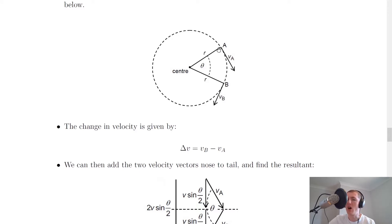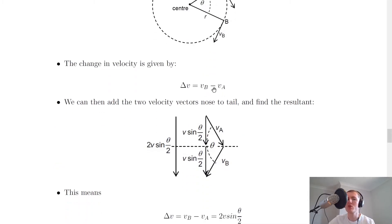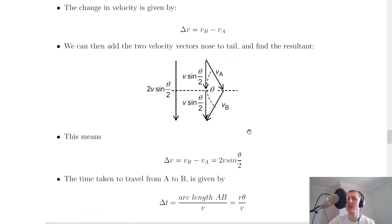The arc that we've swept out from A to B has an angle theta, and the radius of that circular path is R. Now because we've drawn two velocity vectors VA and VB, we want to add those two vectors together nose to tail. Adding these two vectors nose to tail gives us a resultant vector. We've got VA and VB, and adding those nose to tail gives us this resultant vector.